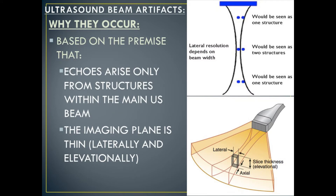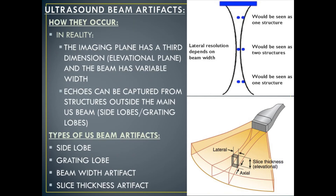Today we're going to explore ultrasound beam artifacts including side lobes, grating lobes, beam width artifacts, and slice thickness artifacts. Ultrasound beam artifacts occur because in reality the imaging plane has a third dimension — the elevational plane — and the ultrasound beam has a variable width. Echoes can be captured from structures outside of the main ultrasound beam, such as our side lobes and grating lobes.